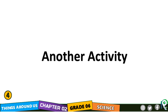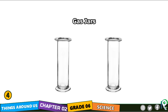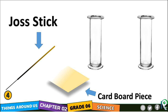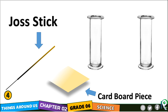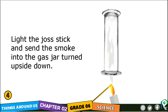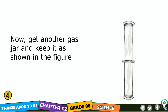Now there is another activity. You need two gas jars, a joystick, and a piece of cardboard. Light the joystick and send the smoke into one gas jar turned upside down. Then get another gas jar and keep it as shown in the figure and observe well. The gas is moving inside the gas jar very clearly, and the smoke in the first gas jar goes to the second gas jar as well.